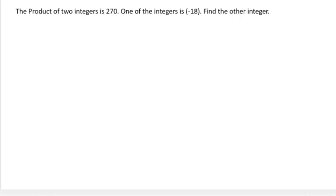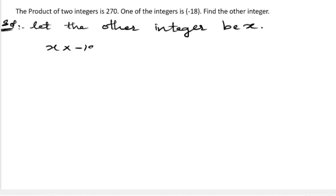So we need to find the other integer. Since we don't know the other integer, we will take that integer be x. Let us write down the solution. Let the other integer be x. So when they are multiplying these two integers, they are getting 270.